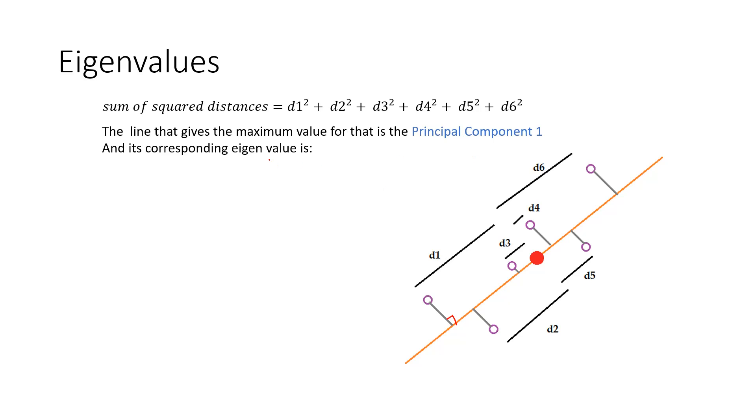And the corresponding eigenvalue for that particular principal component is nothing but the sum of the squared distances for that particular line divided by the number of data points minus 1. This 6 is nothing but the number of data points. This will give us the eigenvalue. These eigenvalues, they quantify the amount of variation around the line.